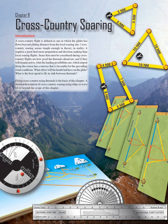Chapter 11: Cross-Country Soaring Introduction. A cross-country flight is defined as one in which the glider has flown beyond gliding distance from the local soaring site. Cross-country soaring seems simple enough in theory, but in reality it requires a great deal more preparation and decision-making than local soaring flights.